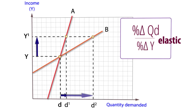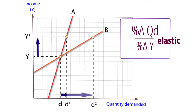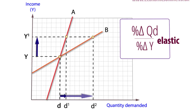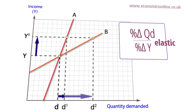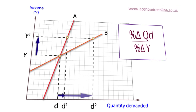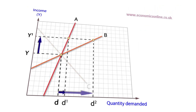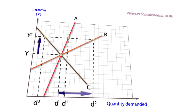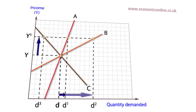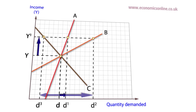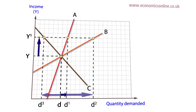Engel curve B also slopes upward, indicating it is a normal good, but the gradient is much flatter, indicating that the quantity demanded of good B changes by a greater proportion than income, hence YED is elastic. In this case the good is not only normal, but is considered to be a luxury good. Finally, with Engel curve C, the gradient is downward sloping, indicating that the relationship between income and quantity demanded is inverse, and the good is an inferior good.